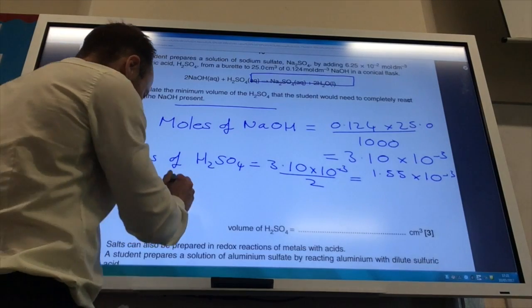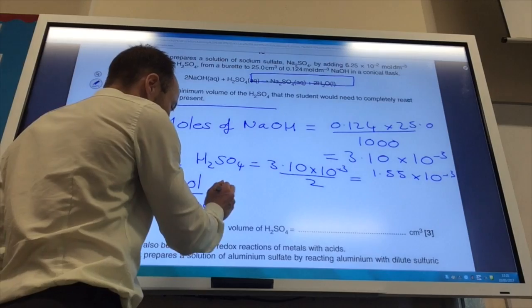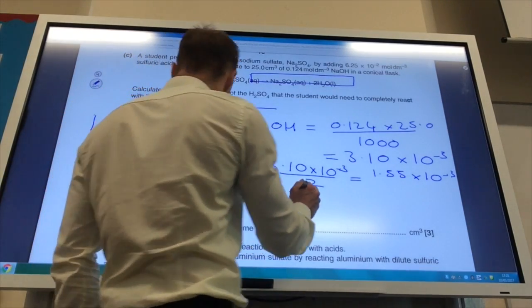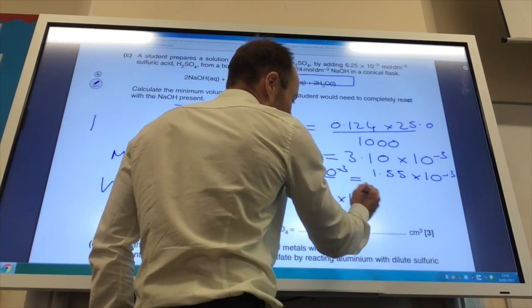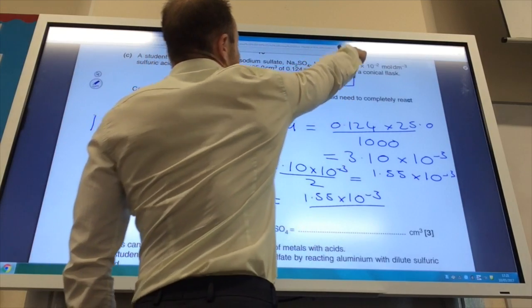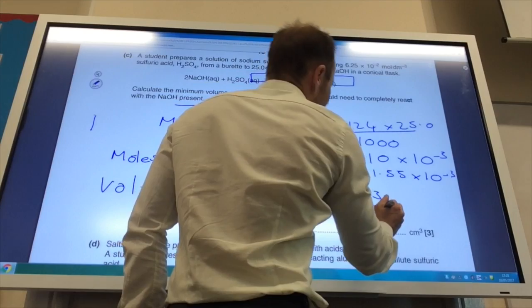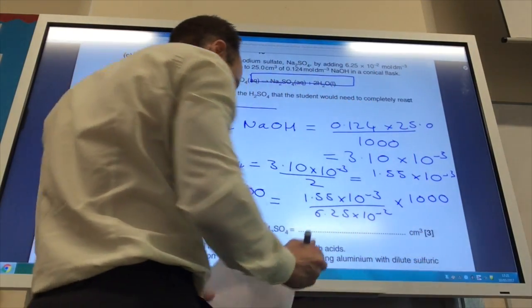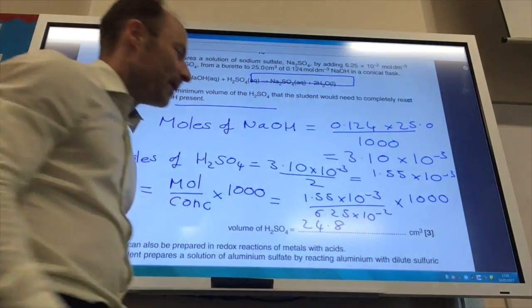And finally, volume is equal to mole divided by concentration times by a thousand. So, you put your numbers in. The number of moles is 1.55 times 10 to the minus 3. The concentration they told me up here has been 6.25 times 10 to the minus 2, times it by a thousand and you will get to the answer of 24.8 centimetres cubed.